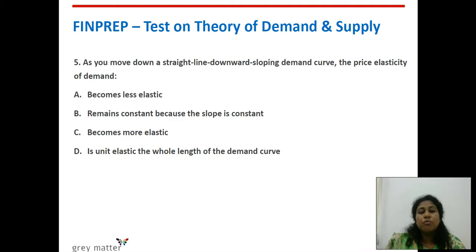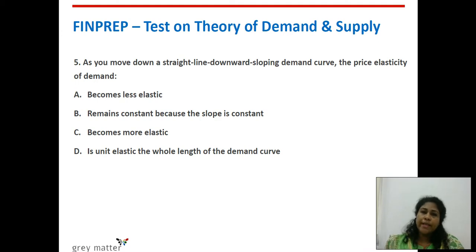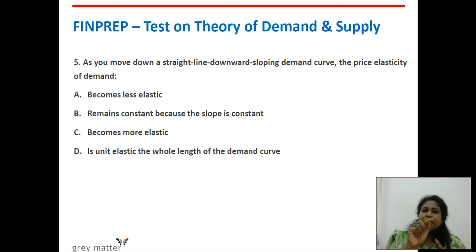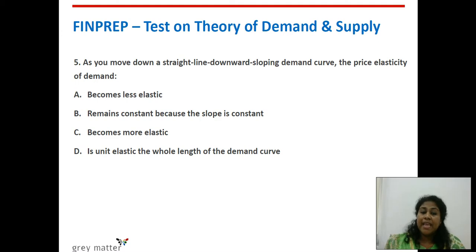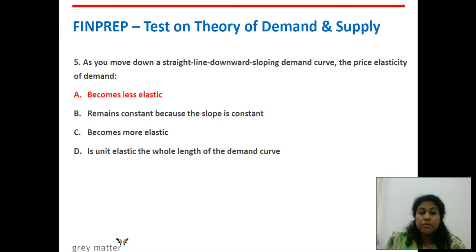Fifth question: as you move down a straight line downward-sloping demand curve, the price elasticity of demand does what? Recall that where the line touches the Y-axis, elasticity is infinity; then it is greater than 1; then equal to 1; then less than 1; then it becomes 0 when it touches the X-axis. As you move down the demand curve, elasticity is reducing — it becomes less elastic.